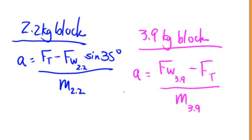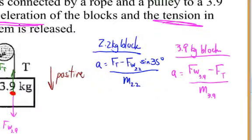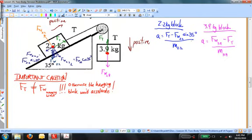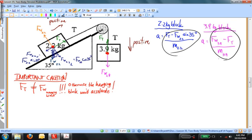Now I have two equations and two unknowns. To solve this system of equations, I notice that acceleration appears in both. I'm going to set the right-hand sides of these equations equal to each other and solve for the resulting variables — acceleration and string tension. Note that weight equals mass times g, and I'll make that substitution as I write these equations down, then solve the system for the tension ft.